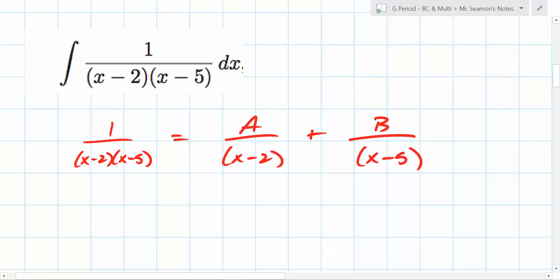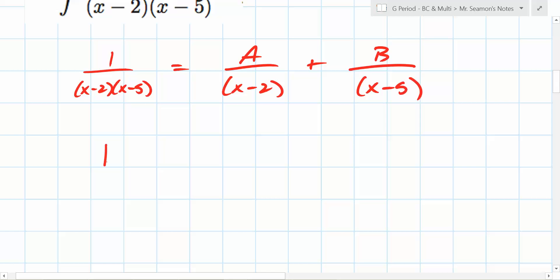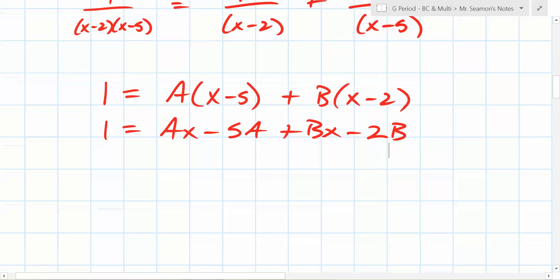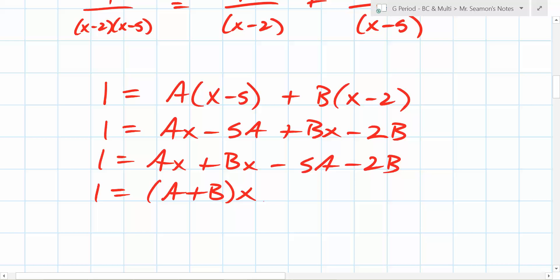Your first goal is to take this and turn it into some constant A over x minus 2 plus some constant B over x minus 5. You get rid of your denominators by multiplying by the common denominator. Your 1 equals A times (x minus 5) plus B times (x minus 2). This is the same thing as Ax plus Bx minus 5A minus 2B. So 1 equals (A plus B) times x minus 5A minus 2B.